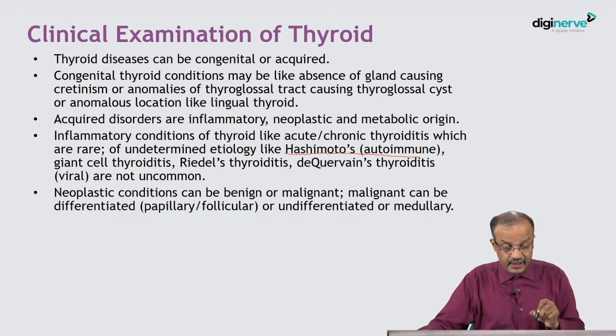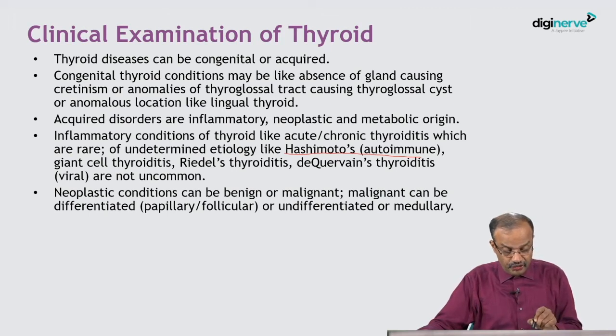Neoplastic conditions can be benign or malignant. Malignant can be differentiated — papillary or follicular — or undifferentiated, or medullary. The current classification calls it differentiated thyroid cancer, undifferentiated cancer, and medullary. Medullary arises from different cells — the parafollicular C-cells — and is related to the release of calcitonin hormone.